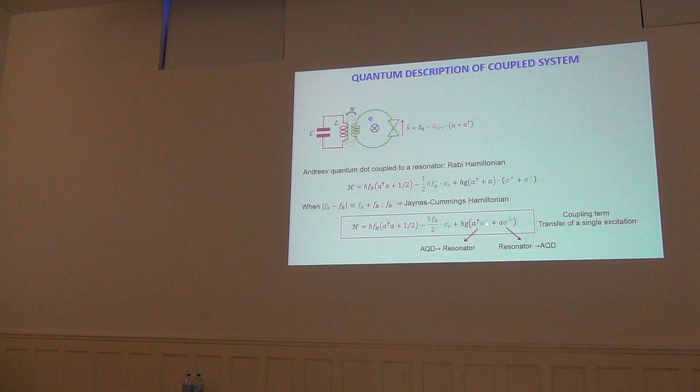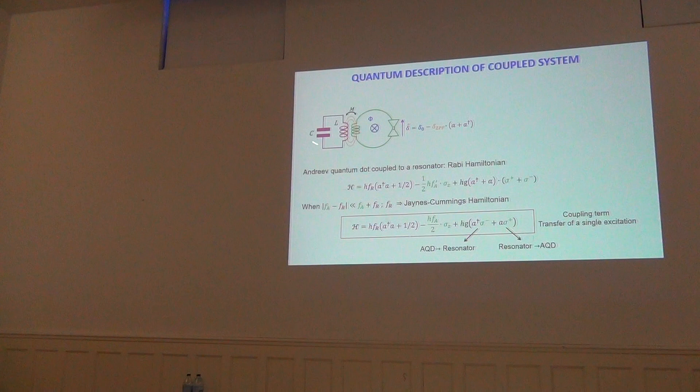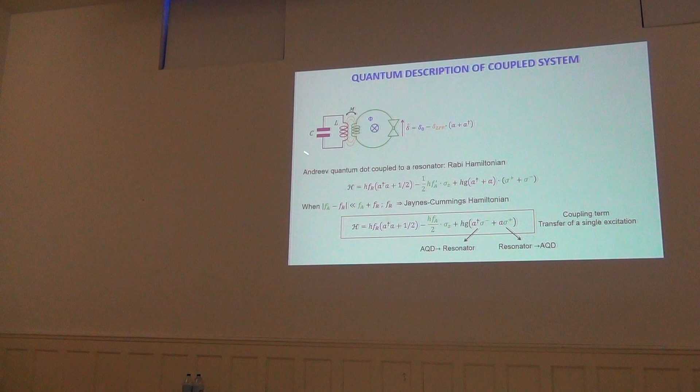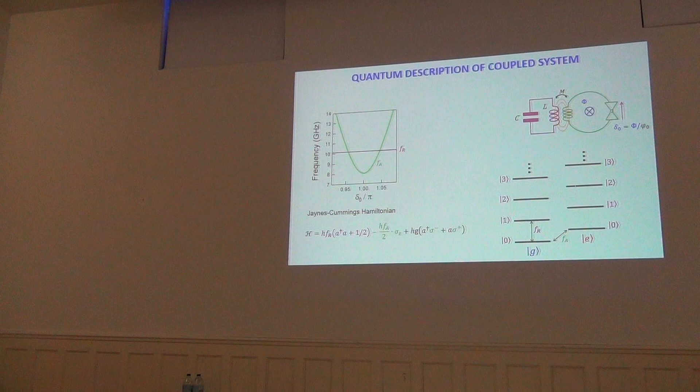The Jaynes-Cummings Hamiltonian has the unperturbed harmonic oscillator, the isolated two-level system, and a coupling term with operators A-dagger sigma-minus and A sigma-plus. This term describes an exchange of excitations: destroy a photon in the resonator and create an excitation in the two-level system, or go from the excited to the ground state and create a photon. Excitations are exchanged between the two subsystems.